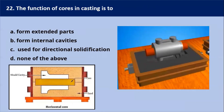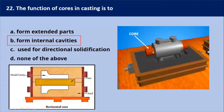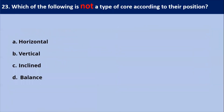Next question: the function of the core in casting is — the core is a device used in the casting and molding process to produce internal cavities. Cores are most commonly used in sand casting. The function of the core in casting is to produce an internal cavity, which may be a horizontal or vertical cavity.